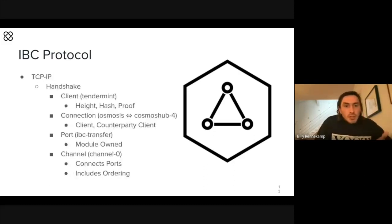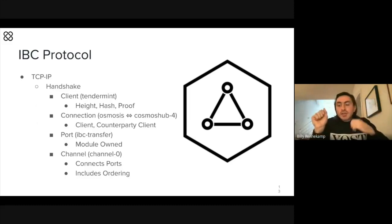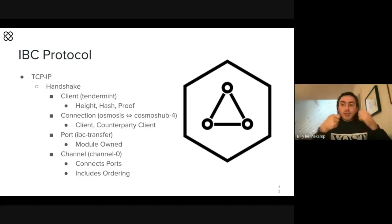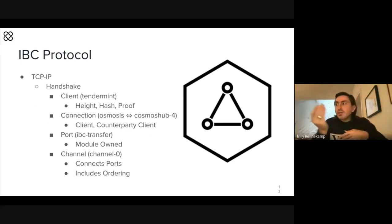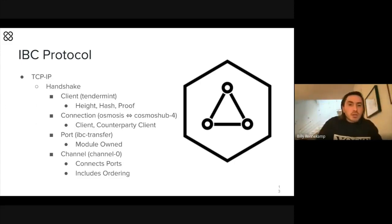There's a handshake that takes place at the beginning where each blockchain tells the other it exists, saying 'this is the light client that I use, do you have an instance of that light client? Here's all the stuff that's happened since I was born, which will give you an idea of who I am and the current state of my application.' That allows further processing of future packets containing IBC token transfers or other application layers.